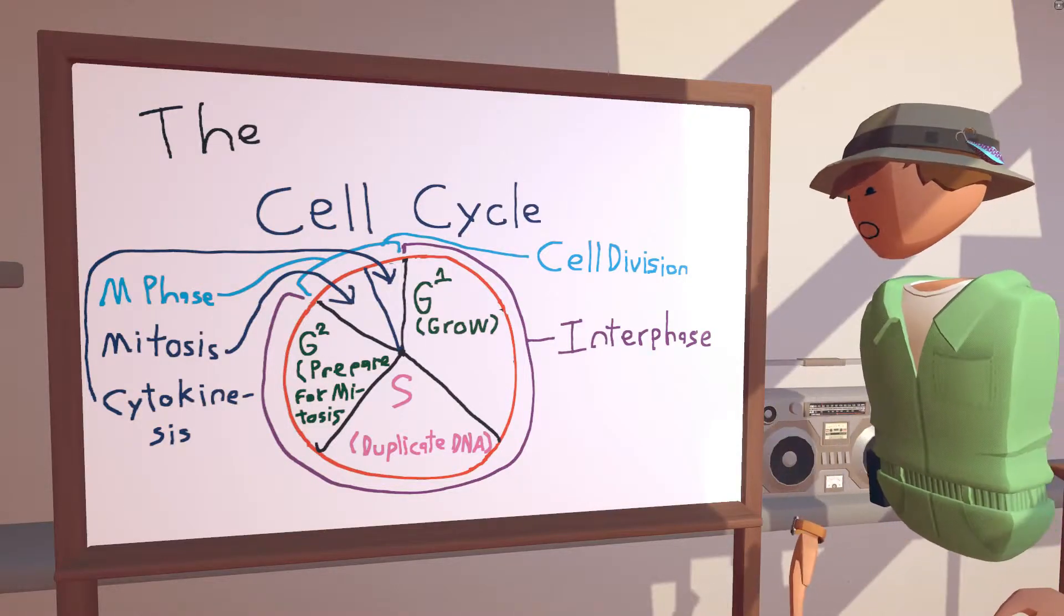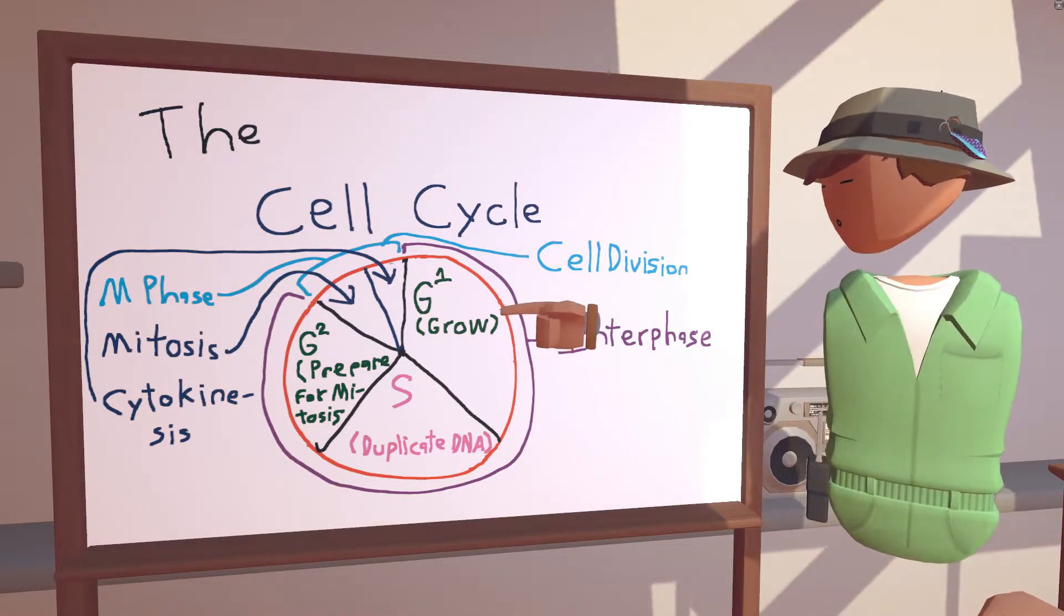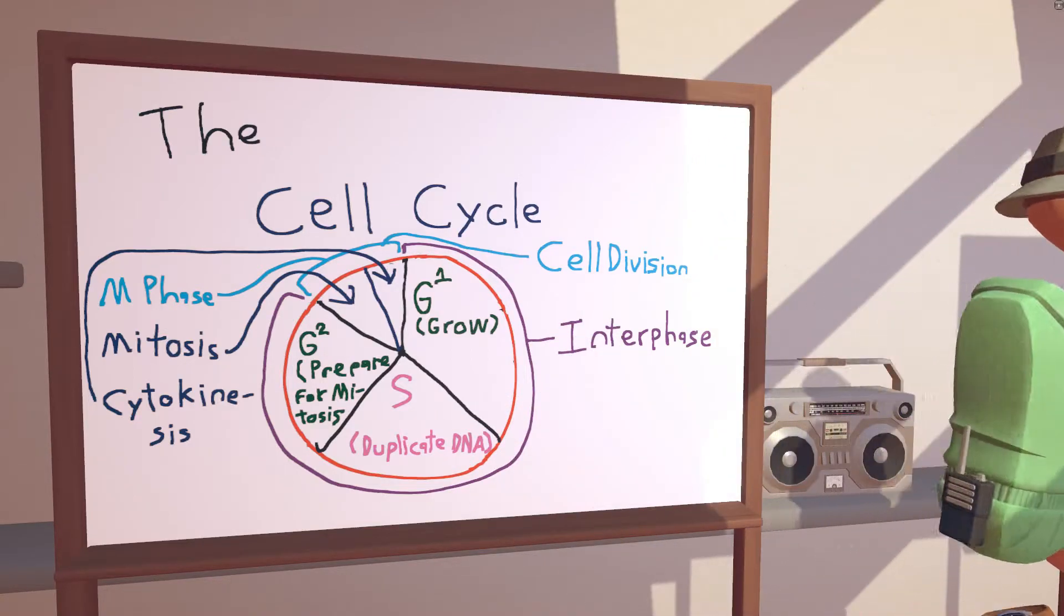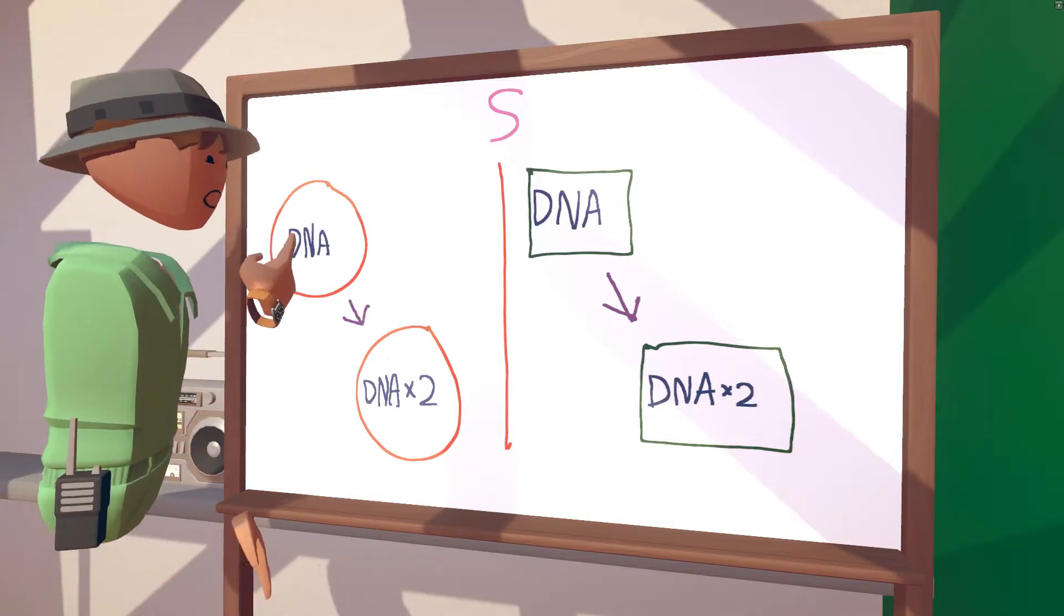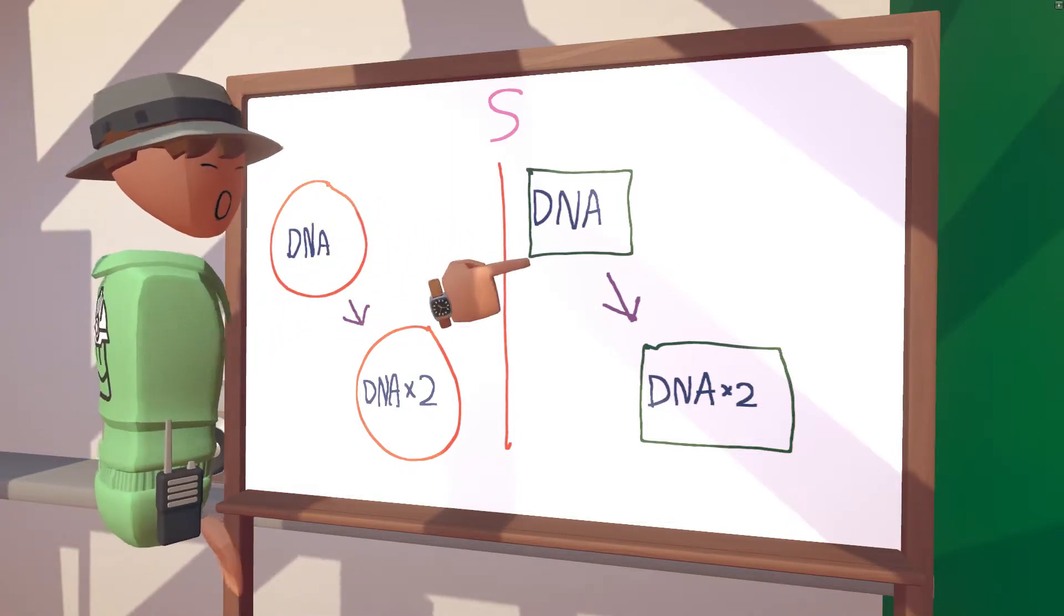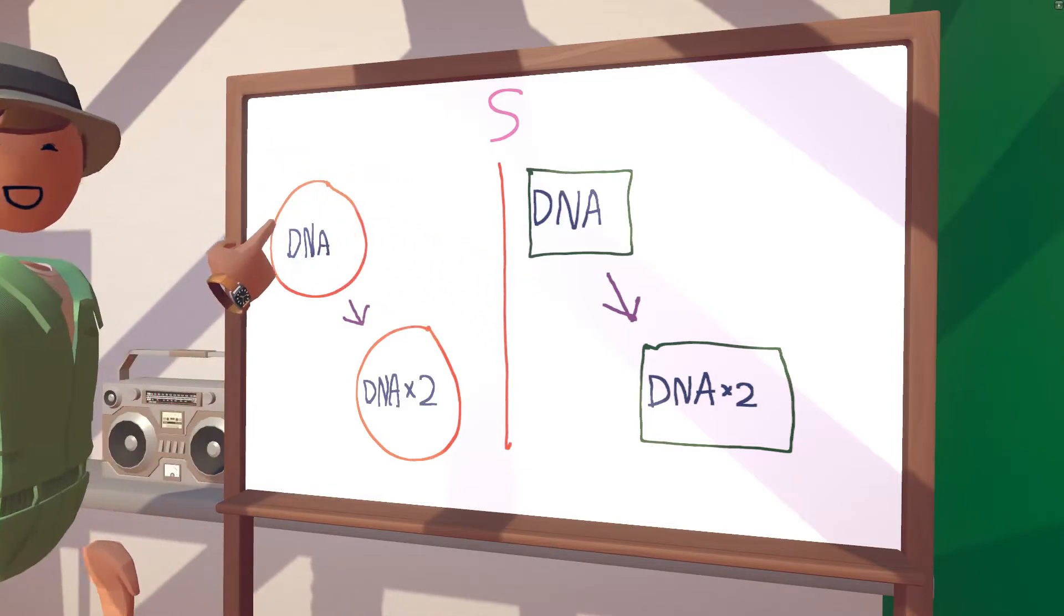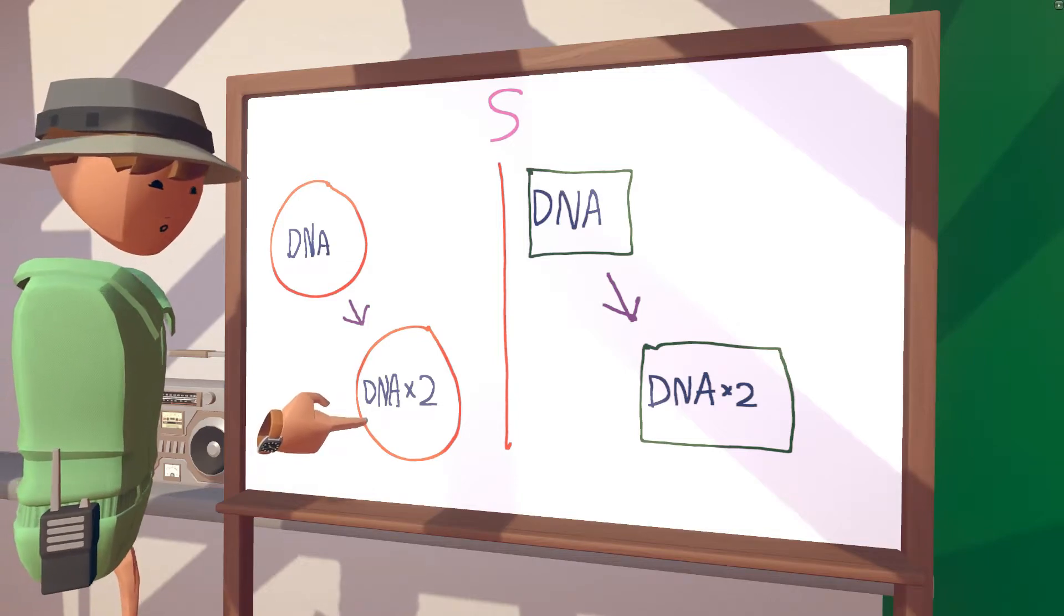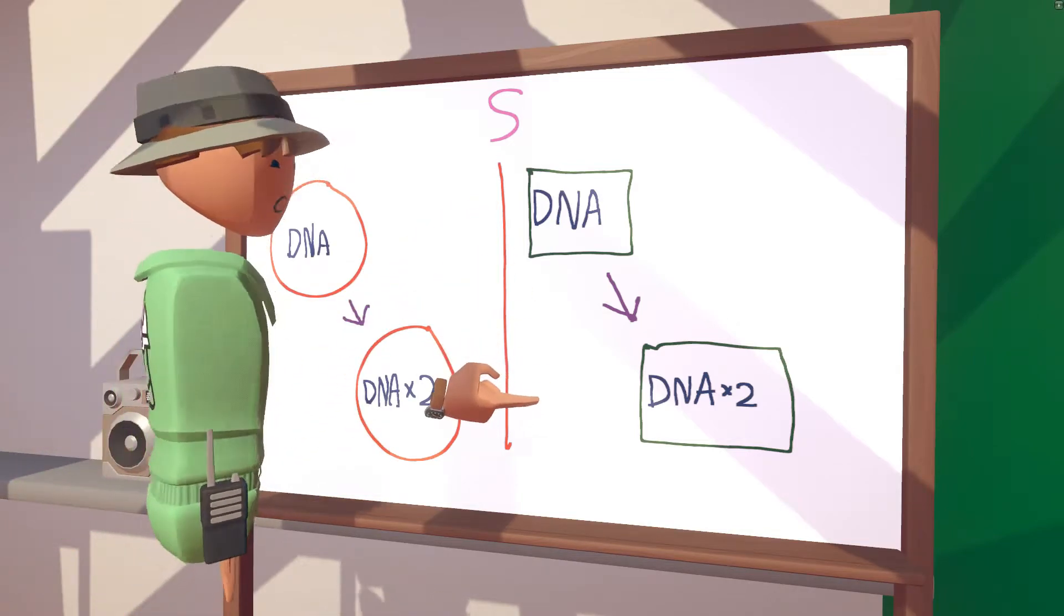After G1 is complete, the cell cycle continues into S phase. And in S phase, the DNA in the cell duplicates. So again, left animal, right plant cell. The DNA, after it goes through S phase, there's two sets of it. And of course, the same in the plant cell.